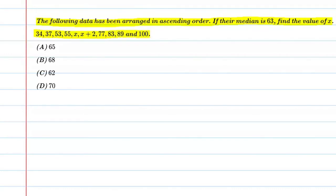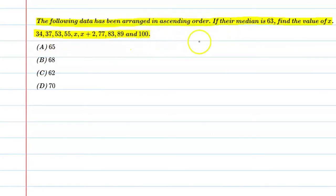Alright, so students, basically this question में हमें एक data provided है और कहा जा रहा है कि जो data है, it is already arranged in ascending order. और कहा गया है कि इस data का जो median है, वो है 63. तो बताइए, x की value क्या होगी?